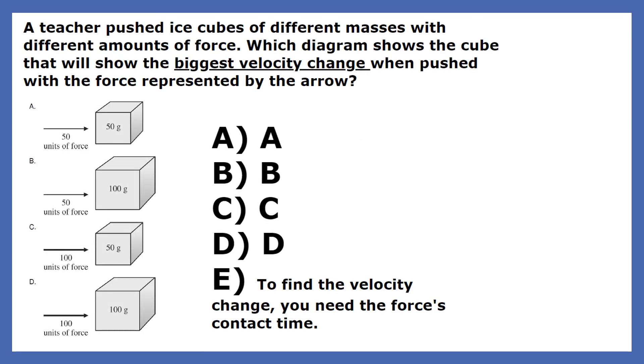This is a good problem to end with. A teacher pushes ice cubes of different masses with different amounts of force. Which diagram shows the cube that will show the biggest velocity change when pushed with the force represented by the arrow? So you have different forces, different masses. Is it A, B, C, D, or E? Which one gets the greatest change in momentum?